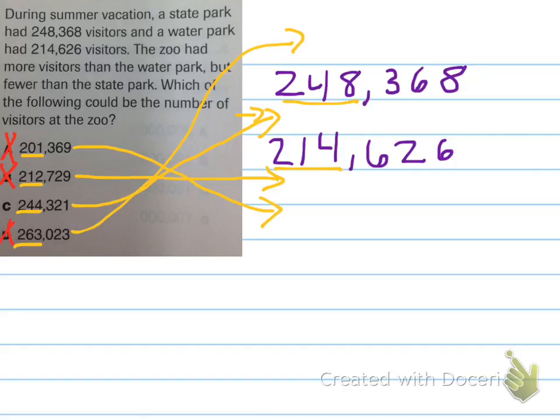So I guess my answer that I'm left with is C, 244,321 because it's in between there. Do you see how I showed my work for this problem? This is a good strategy to use and make yourself feel confident in your answer because you showed the work.